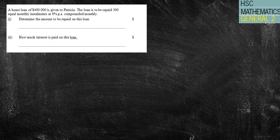All right, now for some written questions. Okay, so a home loan of $400,000 is given to Patricia. The loan is to be repaid in 300 equal monthly installments at 8% compounded monthly.